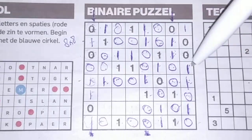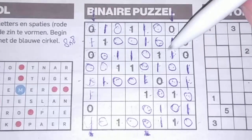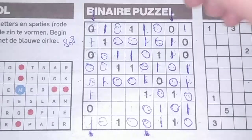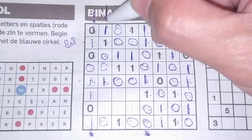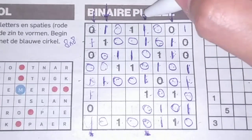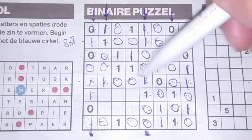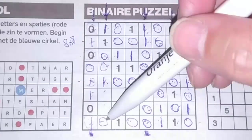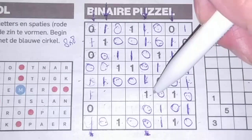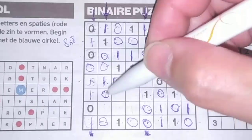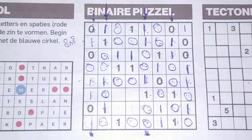Now I need to compare again — this column and that column. One, one, one, one, O, O, O, one, one — empty, empty — O, O. These two numbers I need to switch, so this should be an O and this should be a one.